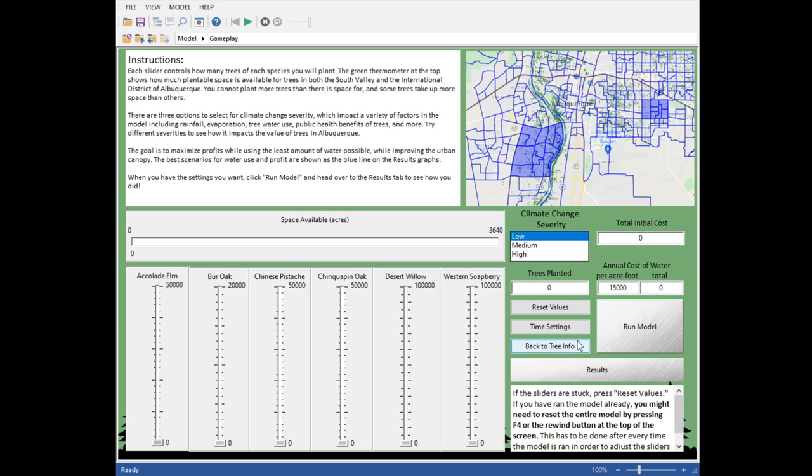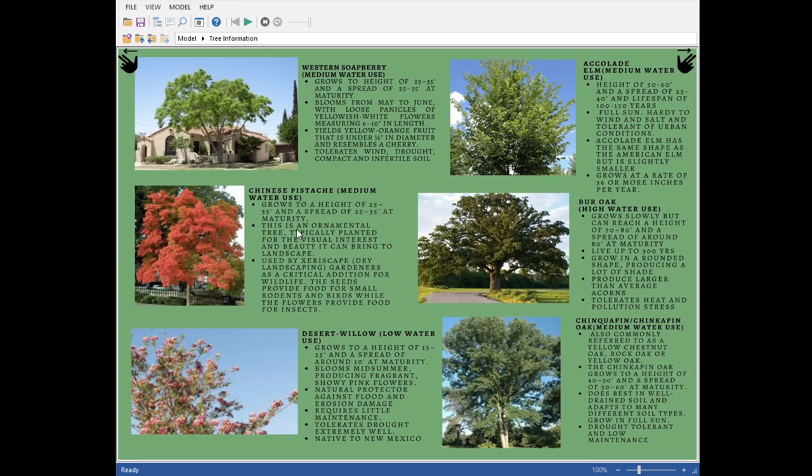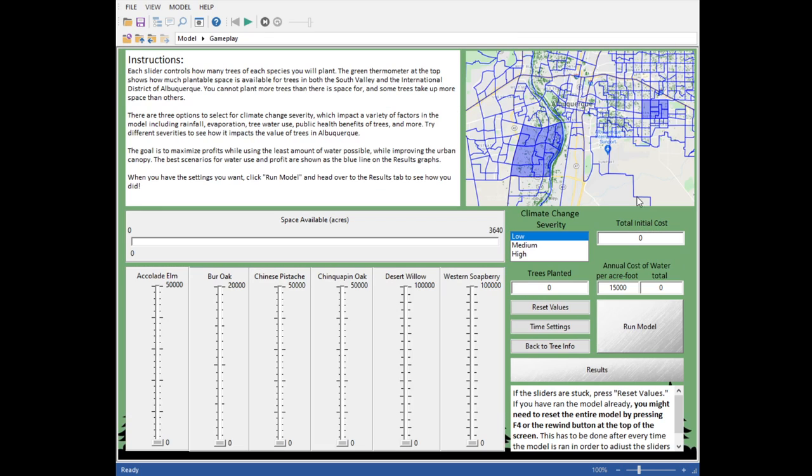Here, you have several buttons. First is the reset values, which we'll get back to. Here's a time settings button, which is a more advanced selection where you can change the duration of the model. It's by default set to 100 years. This button will take you back to the previous page, in case you want to look back and review any information about one of the trees. The run model is what you do after you make all your selections. You'll click that, and then GoldSim will actually calculate your results. And then you see your results by clicking on this, where it'll take you to your next page. This box is just some basic information about troubleshooting, which we'll go over later.